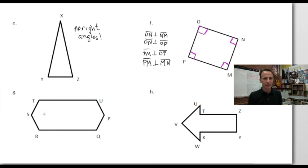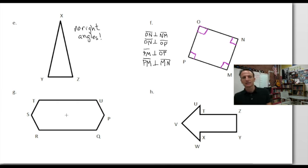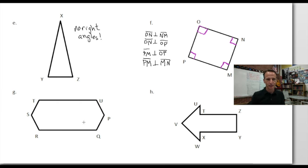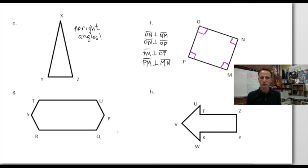Now we look at this figure — it has one, two, three, four, five, six sides. Yes, it's that figure. But look at the angles: obtuse, obtuse, obtuse, obtuse, obtuse, obtuse — they're all obtuse. We have no right angles here. So we're going to write: no right angles.